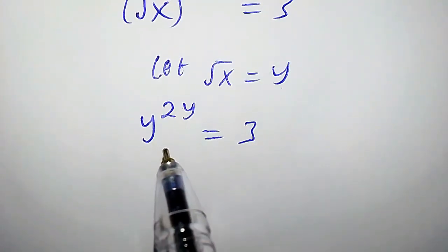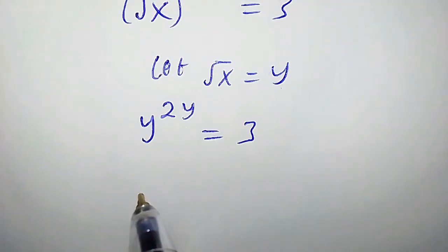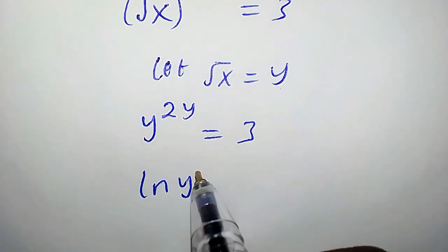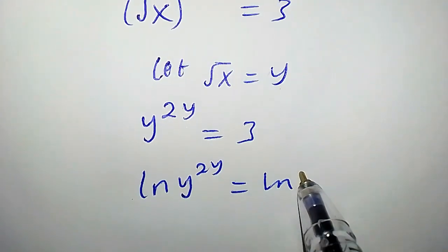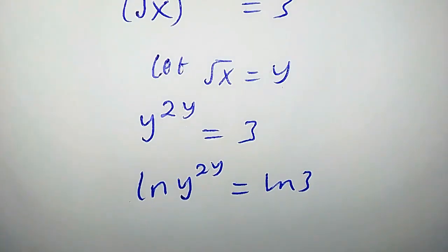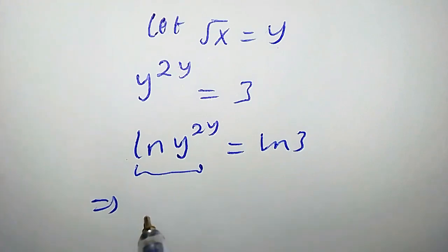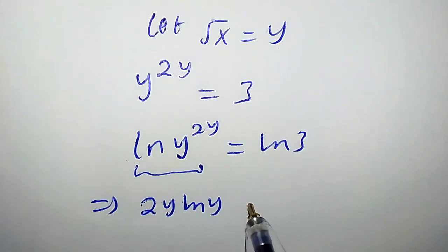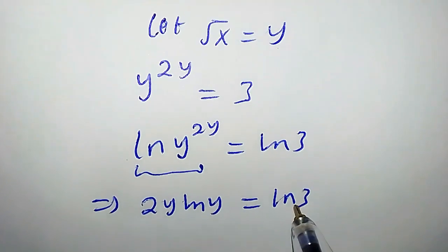Now let us take the natural logarithm of both sides. Doing that, we're going to have ln(y^(2y)) equals ln(3), which implies that the left-hand side is the same as 2y·ln(y) equals ln(3).